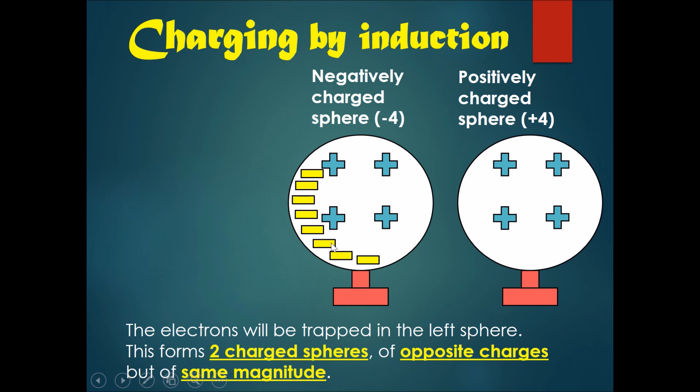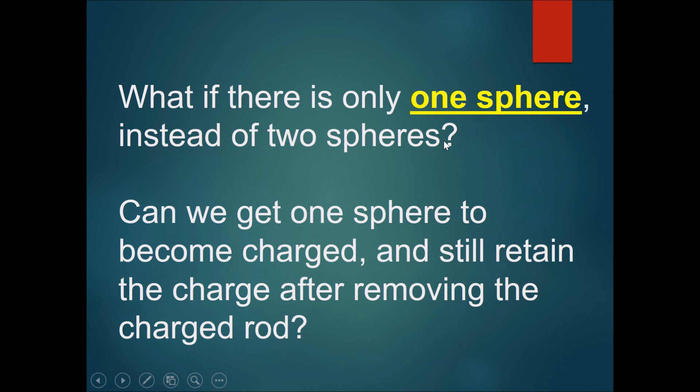Because of this, the electrons that previously gravitated into the left-hand sphere will be trapped there and cannot go back. So this forms two charged spheres of opposite charges—minus and plus—but of the same magnitude.